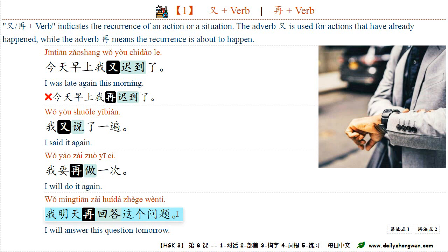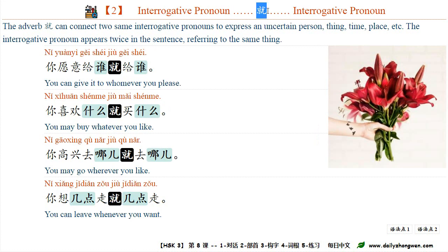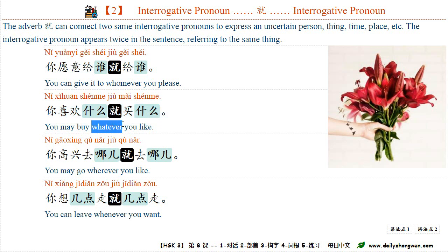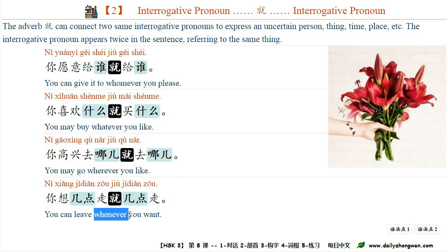语法点二: The adverb 又 can connect two same interrogative pronouns to express an uncertain person, scene, time, or place. For example: 你愿意给谁就给谁 (you can give it to whomever you please — 谁就谁, whomever). 你喜欢什么就买什么 (you may buy whatever you like — 什么就什么, whatever). 你高兴去哪儿就去哪儿 (you may go wherever you like — 哪儿就哪儿, wherever). 你想几点走就几点走 (you can leave whenever you want — 几点就几点).